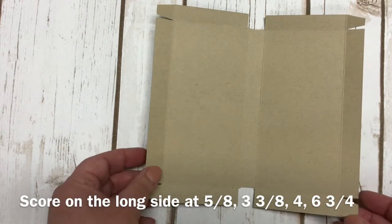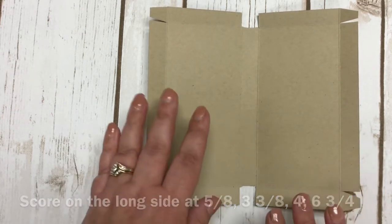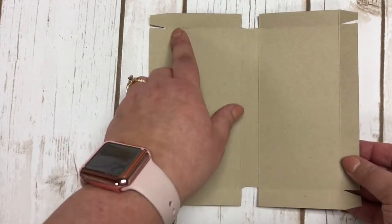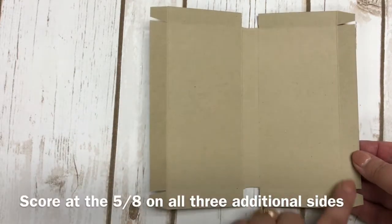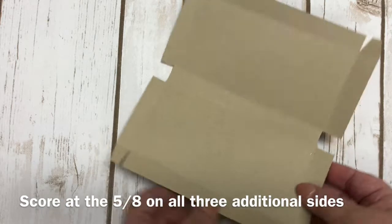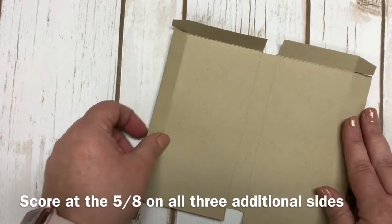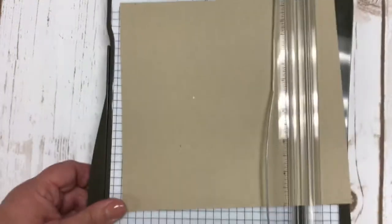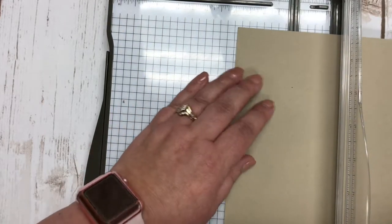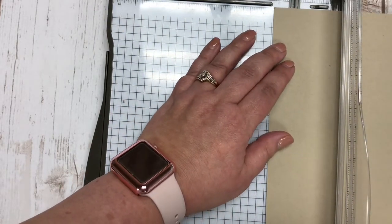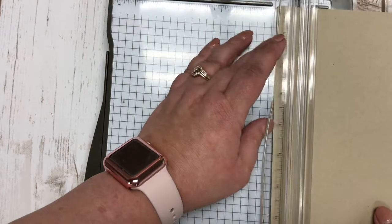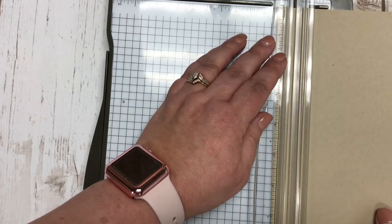I'd need to pull this out but I have one done in advance that I've already scored and it looks like this. Now what you're going to do before we do anything additional is you're going to score at the 5/8 mark on all four—or all the other three sides I should say—because you need to have that little lip area to be able to make your box. You're going to need to turn it a 90 degree angle and score it at the 5/8 mark as well on every single one of these areas. I did one in advance to save a little bit of time.